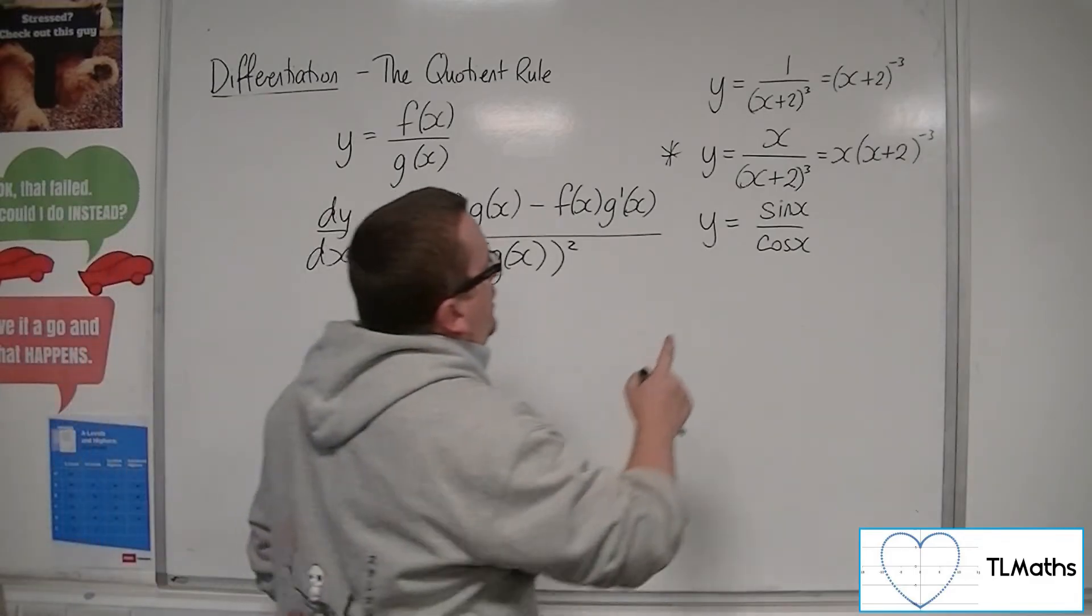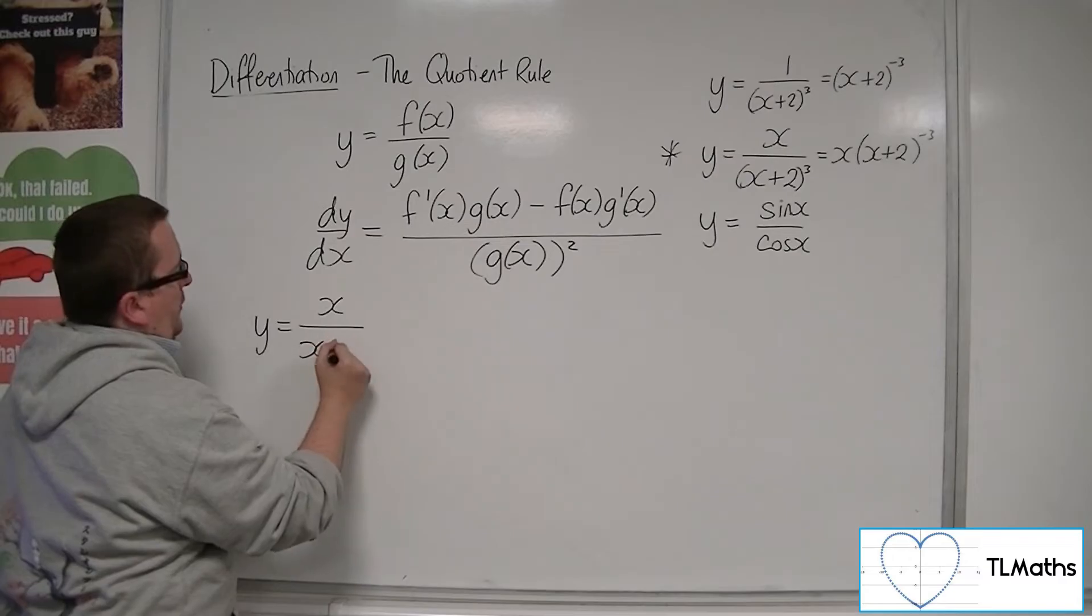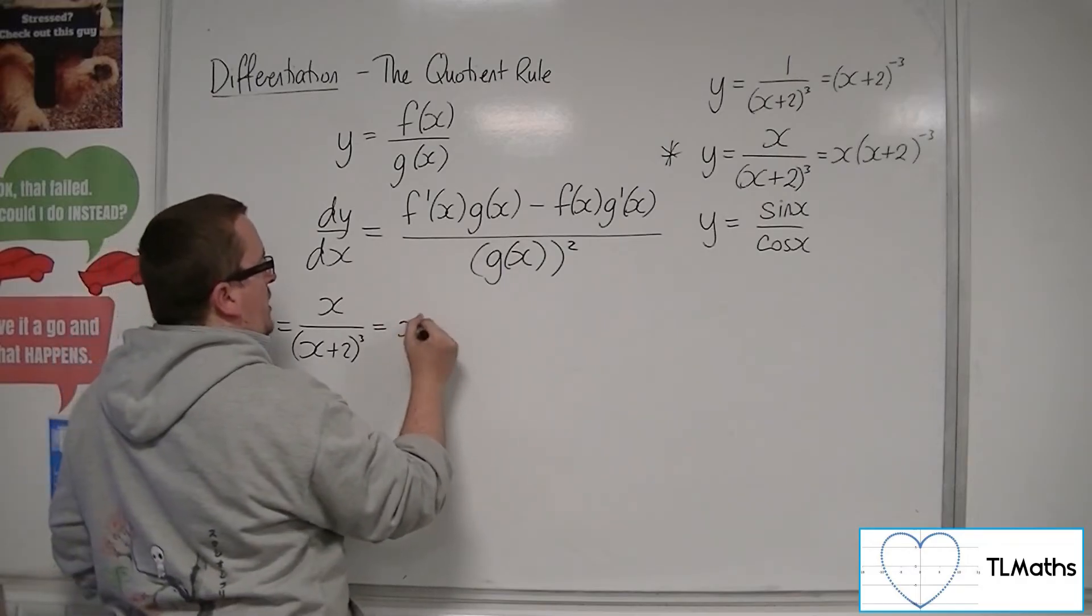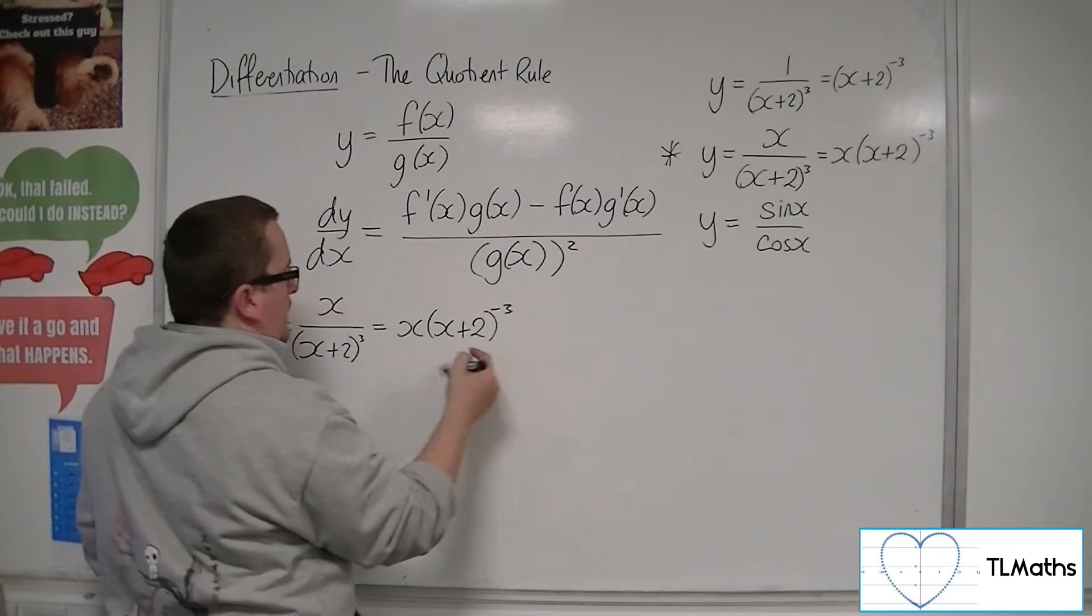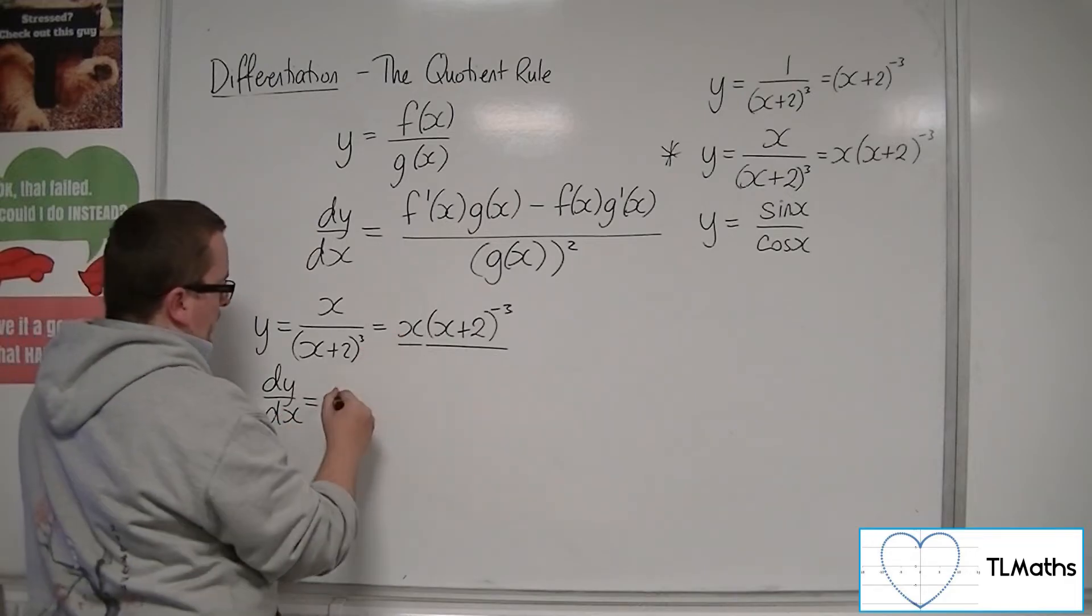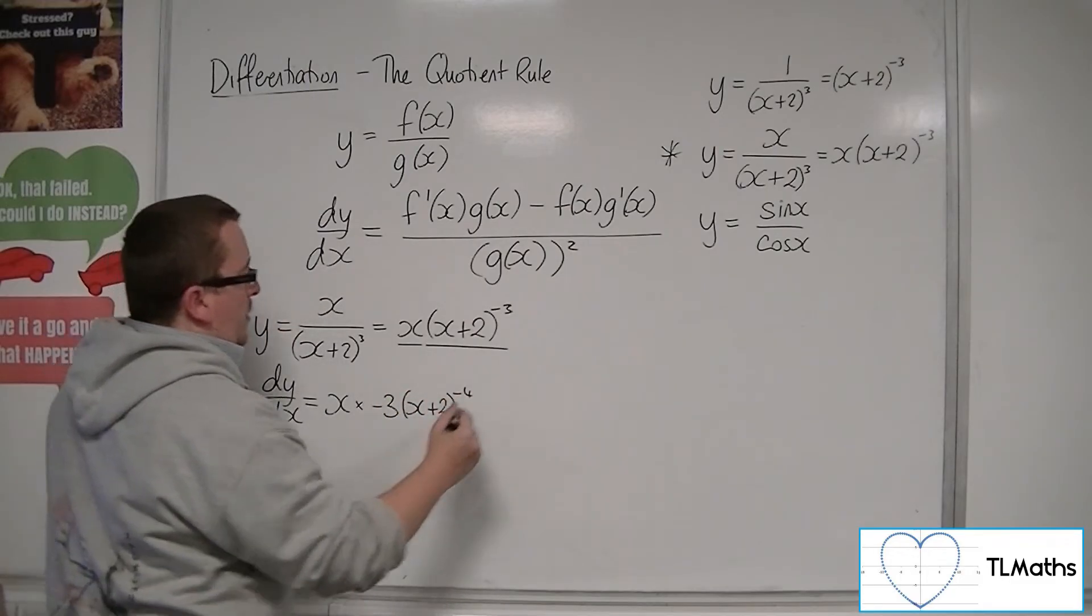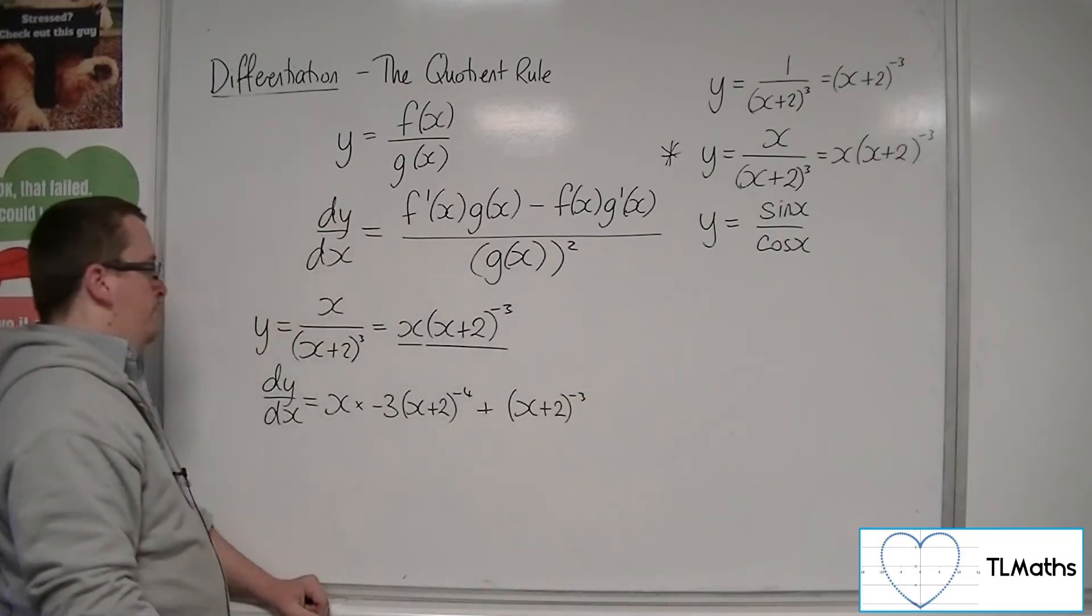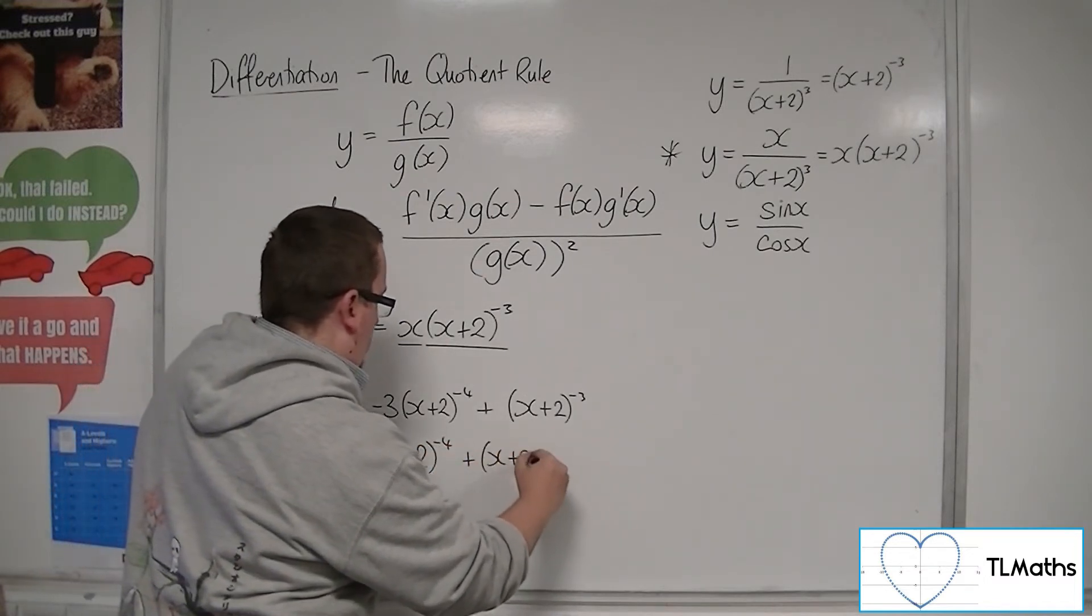What I'm going to do is look at this example now. We're going to do y equals x over (x+2) cubed. Now, if you were going to use the product rule, which you're perfectly within rights to do, you would first of all write it like that, and so we're looking at the product of these two functions. So dy/dx would be the first times the derivative of the second, which would be minus 3(x+2) to the minus 4, plus the second times the derivative of the first. So we get minus 3x(x+2) to the minus 4, plus (x+2) to the minus 3.